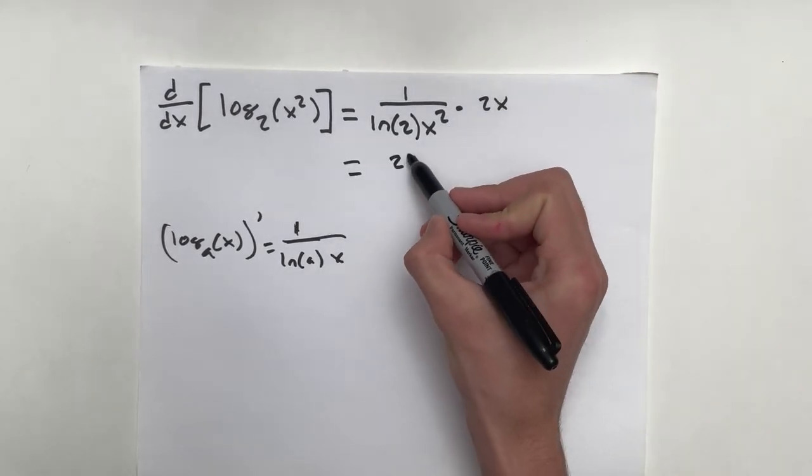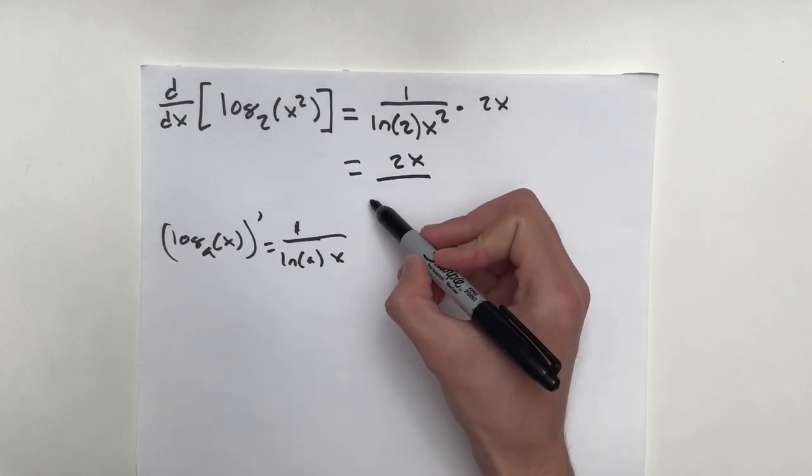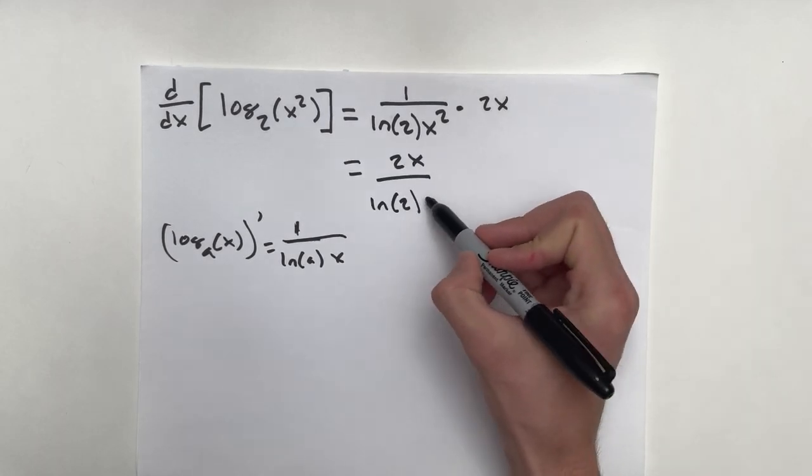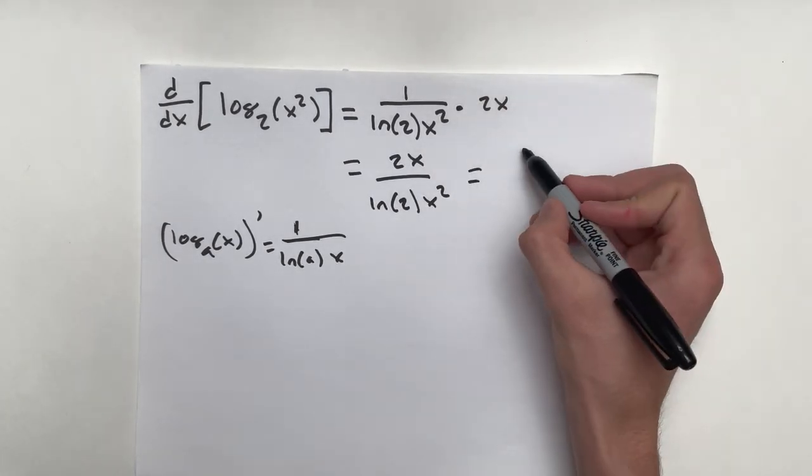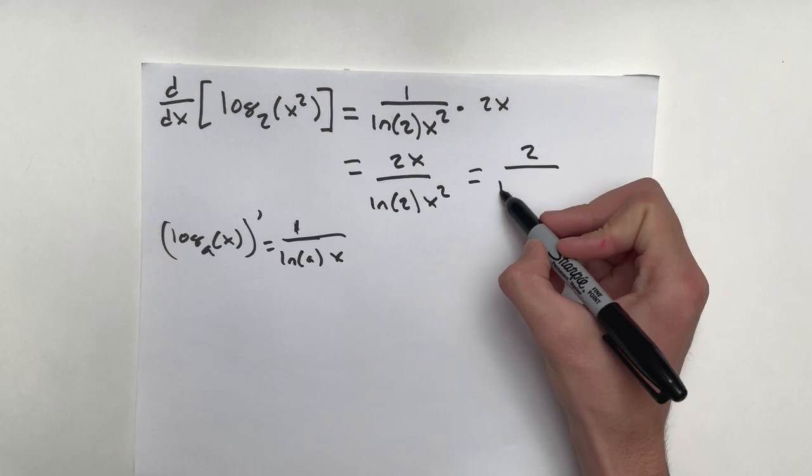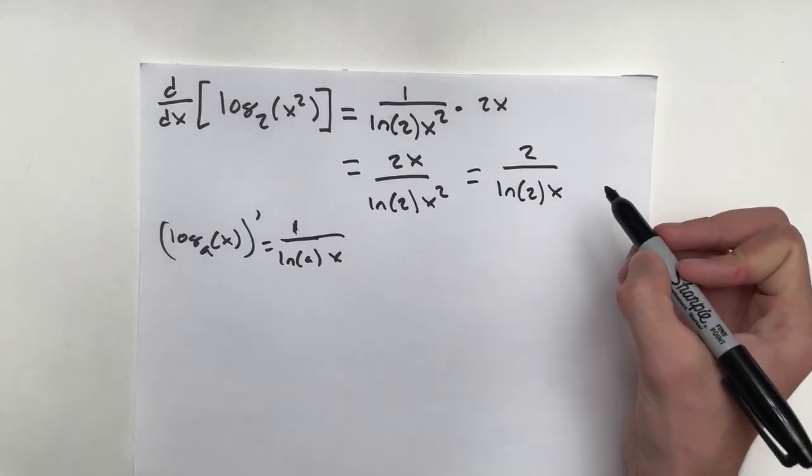So this is going to equal 2x over natural log 2, x squared. Those x's can cancel out.